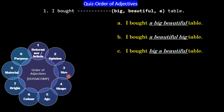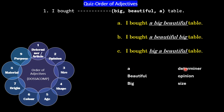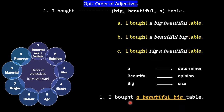Next comes material — wooden, iron, plastic. Finally comes usage or purpose — dining purpose, eating purpose, reading purpose. So applying the order: first is 'a' — the determiner; second is 'beautiful' — opinion; third is 'big' — size. So the answer is B: 'I bought a beautiful big table.'